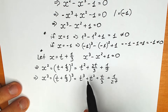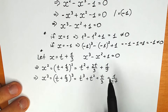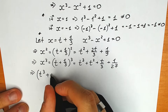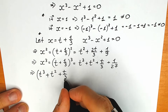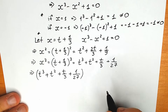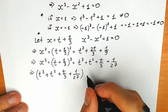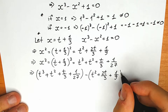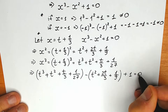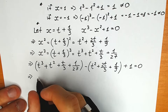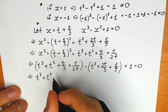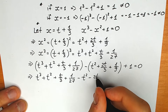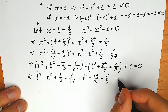Now let's plug each expression into the equation. Instead of x cubed we plug in t cubed plus t squared plus t over 3 plus 1 over 27. Minus, instead of x squared, we have t squared plus 2t over 3 plus 1 over 9. And plus 1 equal to 0. Opening the parentheses: t cubed plus t squared plus t over 3 plus 1 over 27 minus t squared minus 2t over 3 minus 1 over 9 plus 1 equal to 0.